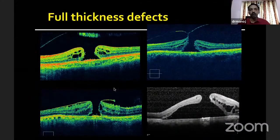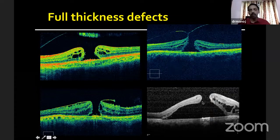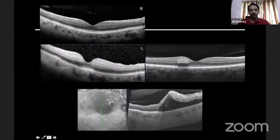Finally, you have full thickness defects, where you can also see the associated pathology. Here, you can see there is a vitreomacular traction causing the full thickness defect. Here, there is a full thickness defect with an epiretinal membrane. In this situation, you can also see subretinal fluid along the macular hole. All of this can be made out on the OCT.